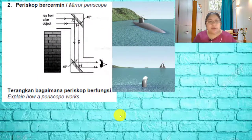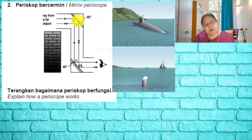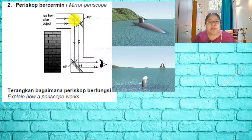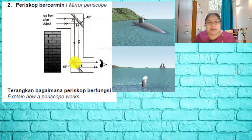The second question asks about the mirror periscope — explain how it works. Light rays hit the first mirror surface; since light cannot enter the mirror, it is reflected. The reflected ray then goes to the second mirror, which reflects it again, and finally it reaches the eyes so you can see the image.